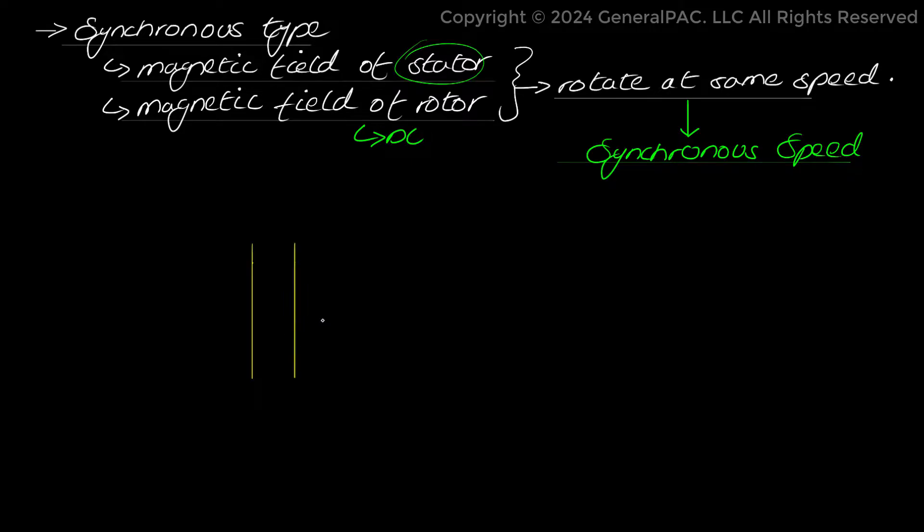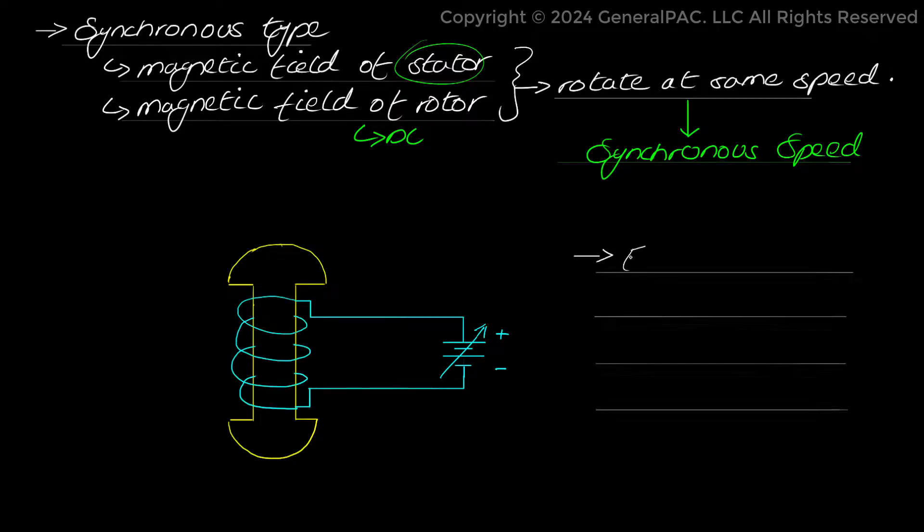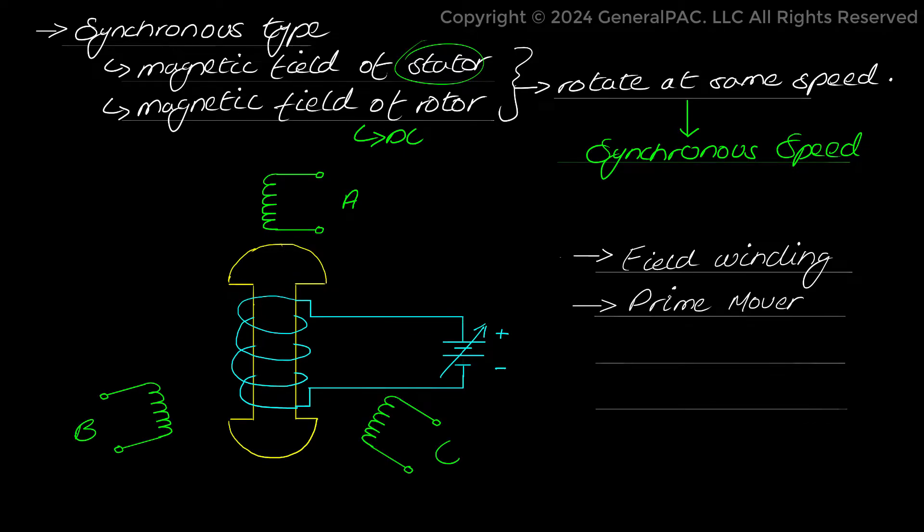Let's discuss the working of a synchronous generator. In three-phase synchronous generators, DC power is supplied to rotor windings, that is field windings, to produce magnetic field inside the rotor. Prime mover is connected to rotor to rotate it, hence inducing a rotating magnetic field in the rotor. Now due to the effect of rotating magnetic field in the rotor, three-phase AC voltages are induced in stator windings, that is armature windings.